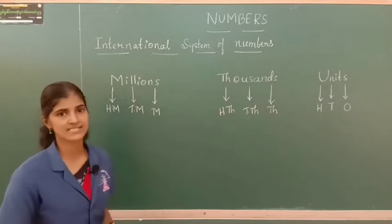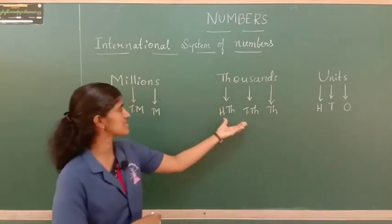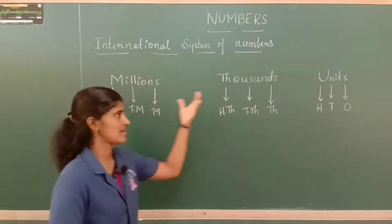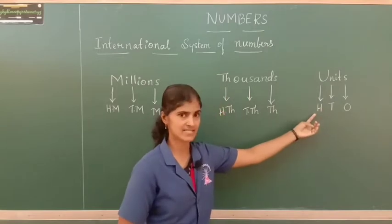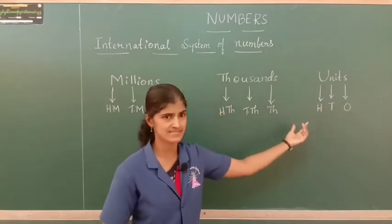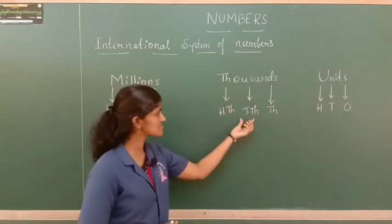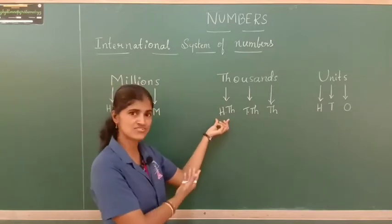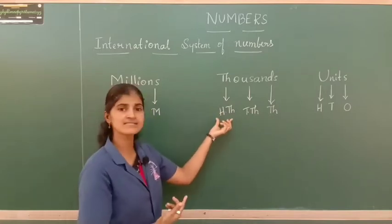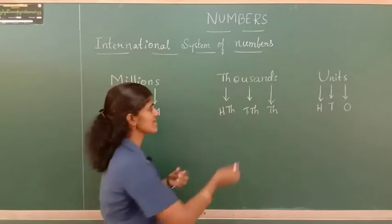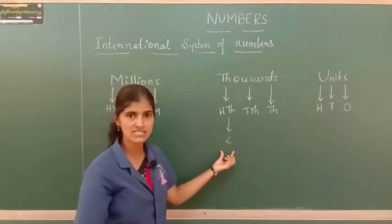Let me repeat the groups once again. The first period is the units period, then the thousands period, and the millions period. Under the units period we have ones, tens, and hundreds — the same order as in the Indian system. Then in the thousands period we have thousand and ten thousand. The changed word is hundred thousand, which is equal to lakh in the Indian system.